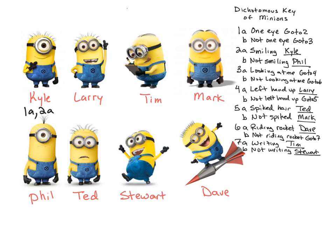Now let's key out Larry. Larry is not one eye, so that'll be one B — go to three. Three: looking at me. Larry is looking at me, so that'll be three A — go to four. Four: left hand up. There he is — Larry. Four A. Tim is not one eye, so that'll be one B — go to three. He is not looking at me, so that'll be three B — go to six. Six says riding a rocket or not riding a rocket. Tim is not riding a rocket, so he'll be six B — go to seven. And then it says he's writing, so he will be seven A.